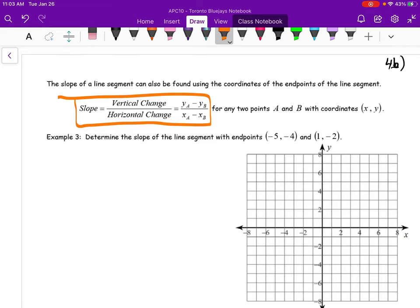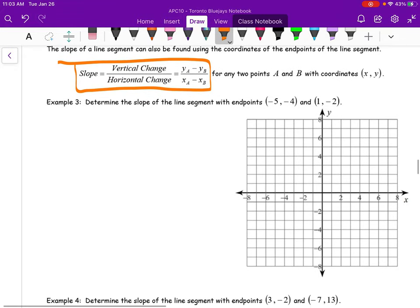Determine the slope of the line segments with endpoints negative 5, negative 4, and 1, negative 2.